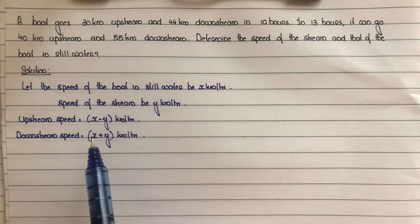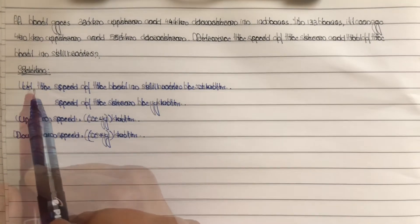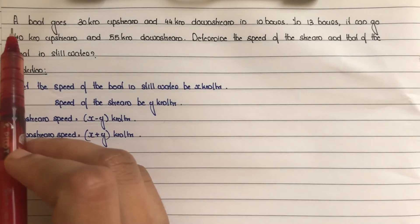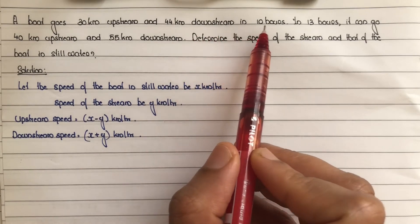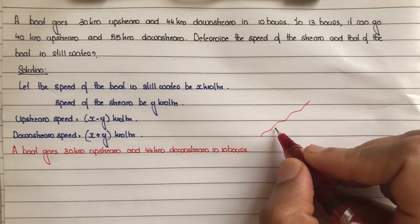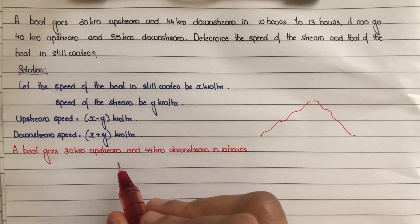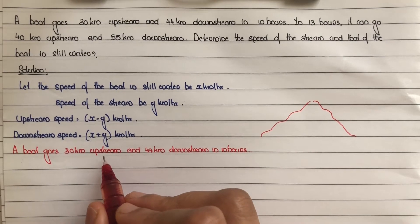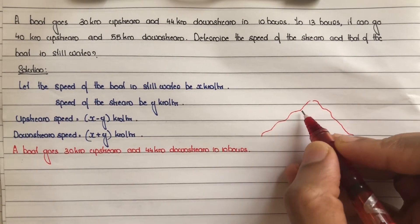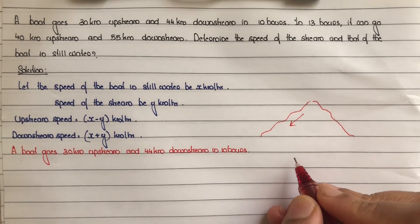Next step: form equations based on the given conditions. Let's draw upstream and downstream directions. When the boat moves opposite to the stream's flow direction, we call it upstream. When the boat moves in the same direction as the stream's flow, we call it downstream.